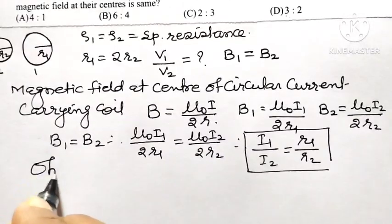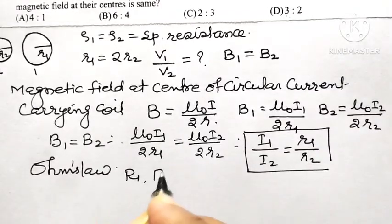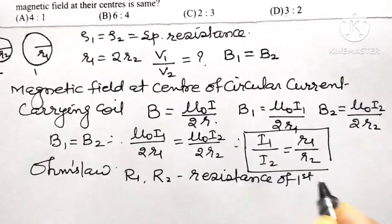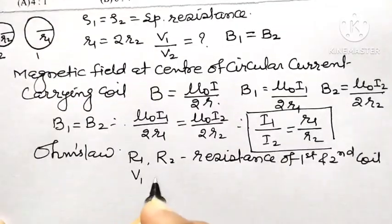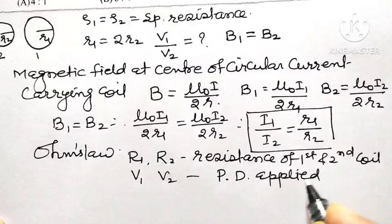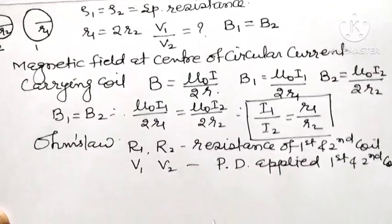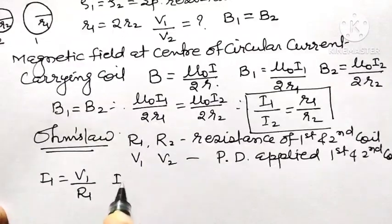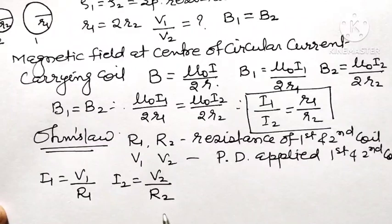According to Ohm's law, if R1 and R2 are the resistance offered by the first and second coil, and V1 and V2 are the potential differences applied across the first and second coil, then I1 = V1/R1 and I2 = V2/R2.